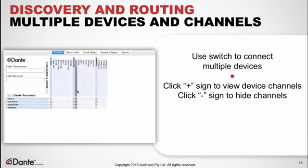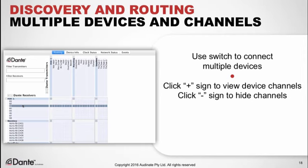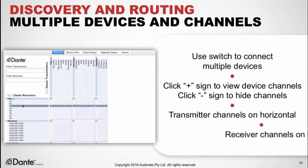Click the plus sign by the words 'Dante Transmitters' and 'Dante Receivers' to reveal the individual channels for all devices. You can also click the plus sign by each device name to open channels for only that device. Most Dante devices are both transmitters and receivers — analogous to sources and sinks. The transmitter channels always appear on the horizontal axis and the receivers on the vertical.